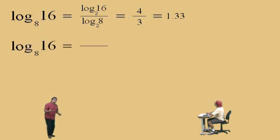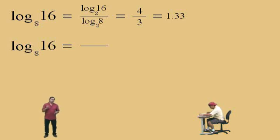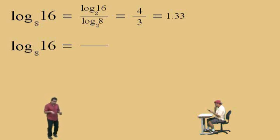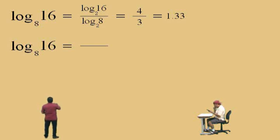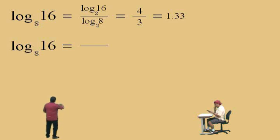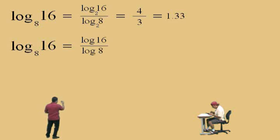Same problem again: log base 8 of 16. This time we're going to use our calculator. Keep in mind, your calculator only does log base 10 — the common logarithm — or log base e, which we call the natural logarithm. Those keys should be LOG and LN. We're going to apply the change of base rule and change to log base 10. We have log of 16 on top, which denotes log base 10 of 16, and in the denominator we have log base 10 of 8, or log of 8.